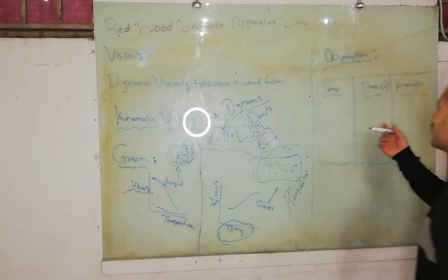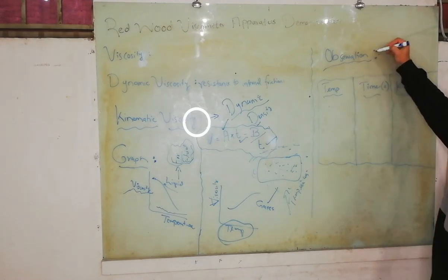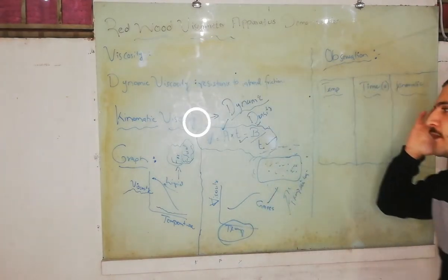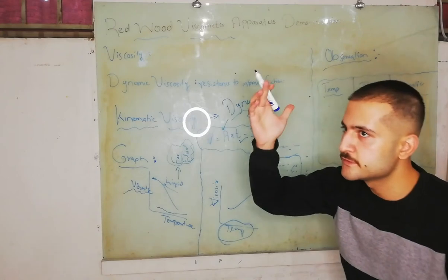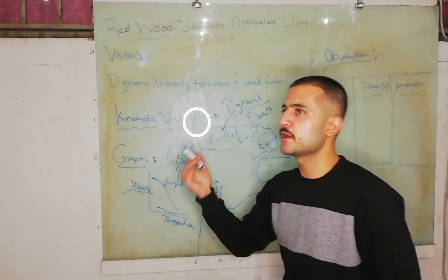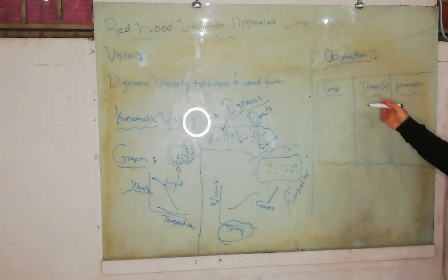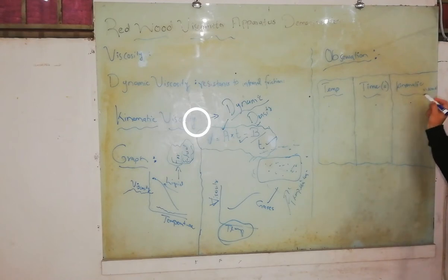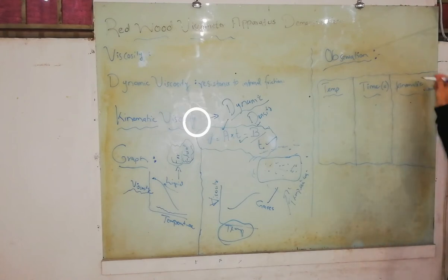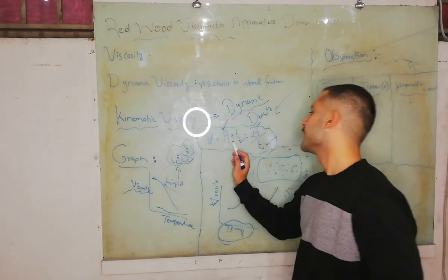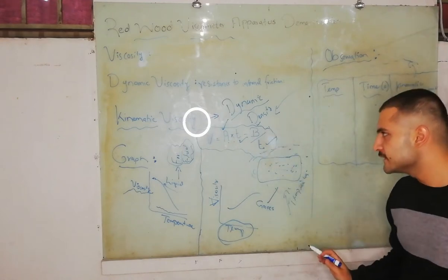For observation, we are going to have a demonstration as well. We have a reference meter. If we use that, we will likely plot a graph showing that viscosity is decreasing with an increase in temperature, and with a decrease in temperature, viscosity is again in higher position. So observations are temperature versus kinematic viscosity. Kinematic viscosity we already know is V equal to AT minus B over T.